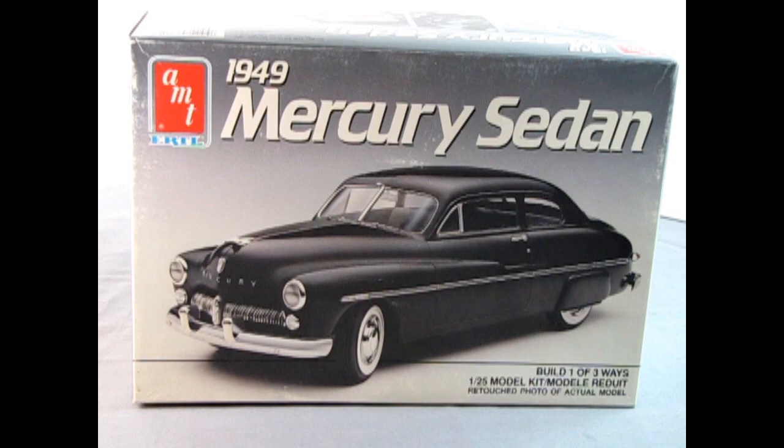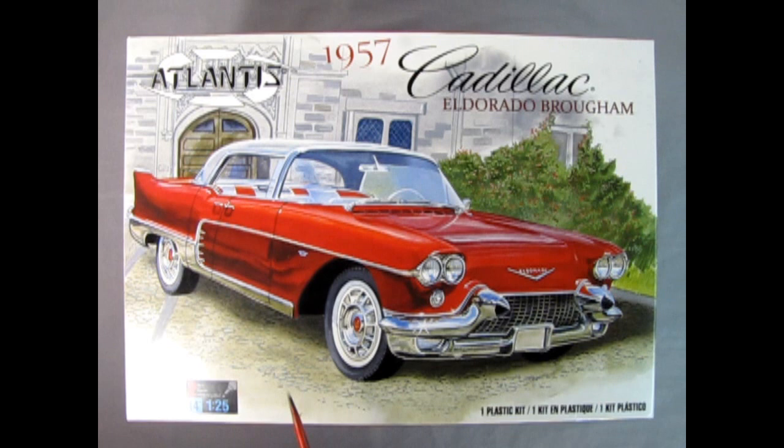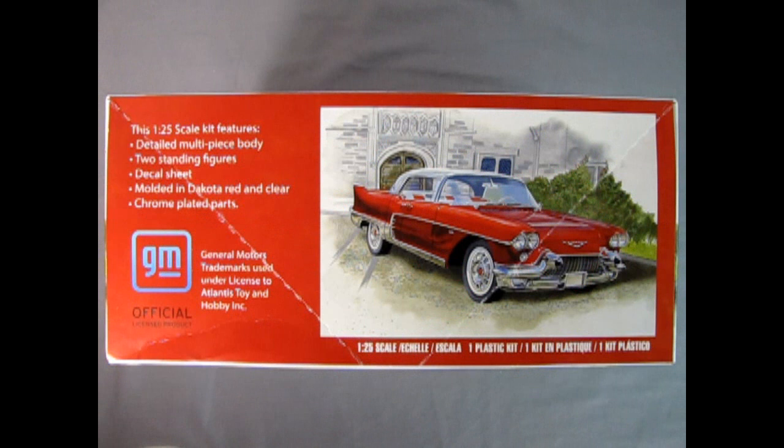So without further ado, let's go down to the bench and see what's in the box. The Atlantis 1957 Cadillac Eldorado Brougham is a 1/25th scale model kit, skill level 2 for ages 14 and up. This model kit was originally released by Revell in 1957, so the mold process is different.